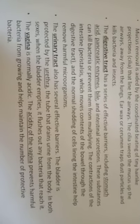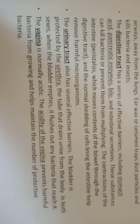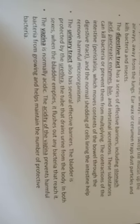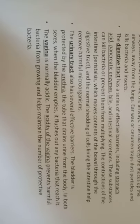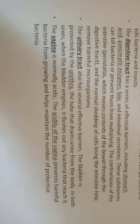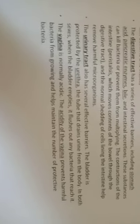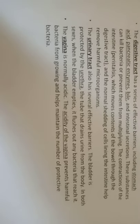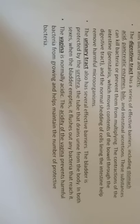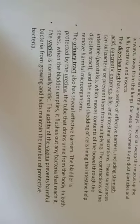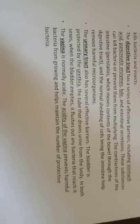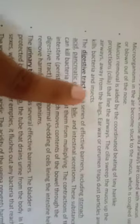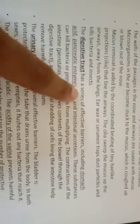The digestive tract has a series of effective barriers including stomach acid, pancreatic enzymes, bile, and intestinal secretions. These substances can kill bacteria or prevent them from multiplying. The contractions of the intestine and the normal shedding of cells lining the intestine help remove harmful microorganisms. The urinary tract also has several effective barriers.